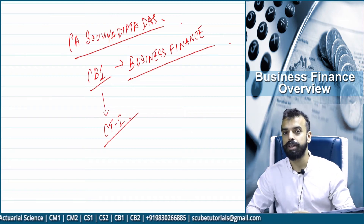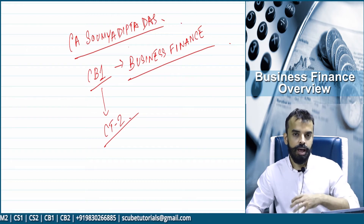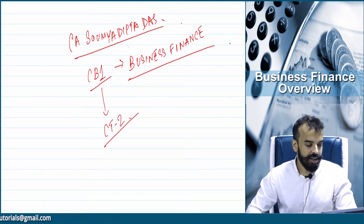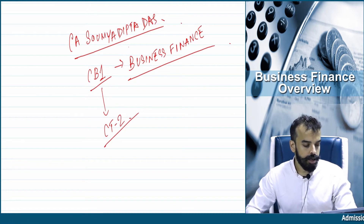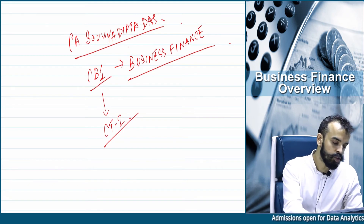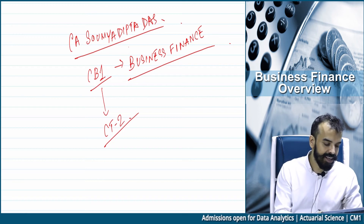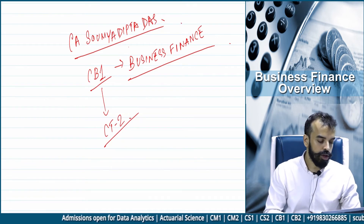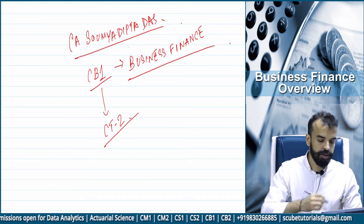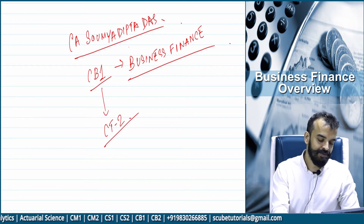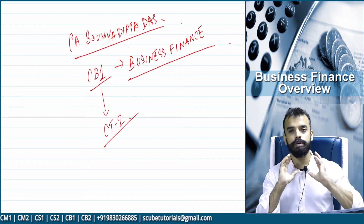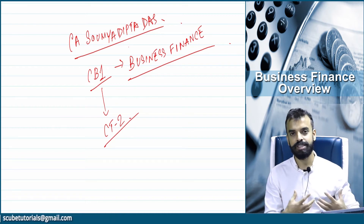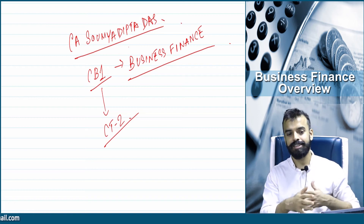Here you will learn accounts not as an accountant but as a user of accounting information, so that you can clearly understand and interpret financial statements. There are also limitations of accounts and alternative reporting. Evaluation of working capital is a new topic — marked N because it is new — as is management information, and growth and restructuring of companies. Weighted average cost of capital, dividend policy, and capital project appraisal remain the same. That is a brief comparative between CT2 and the new CB1.